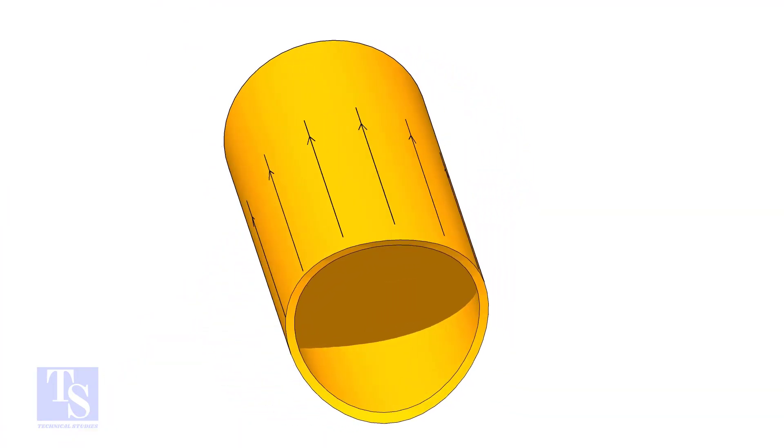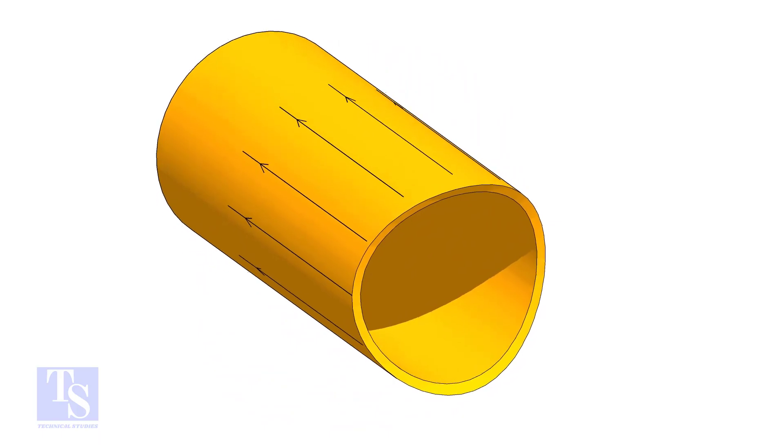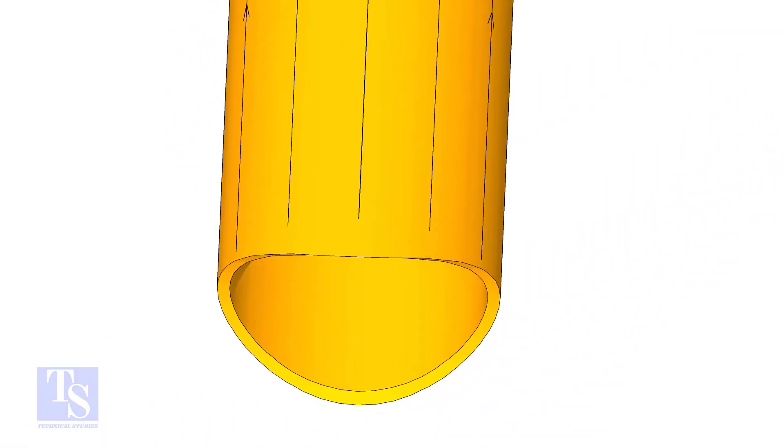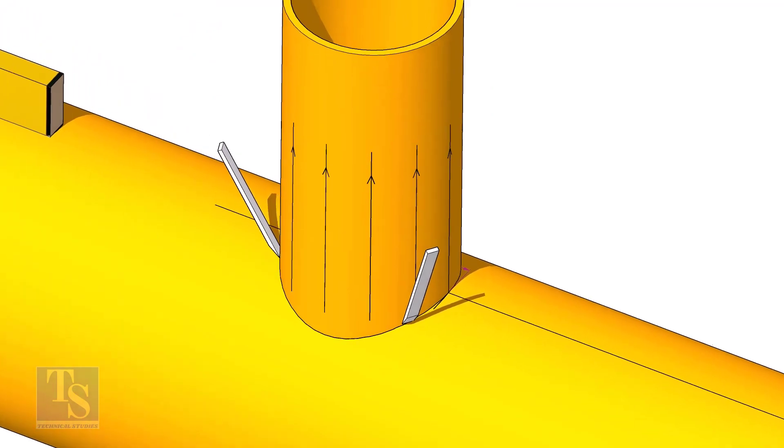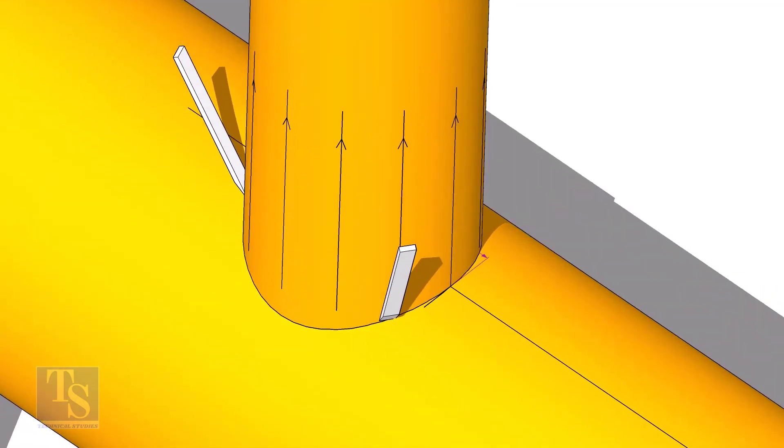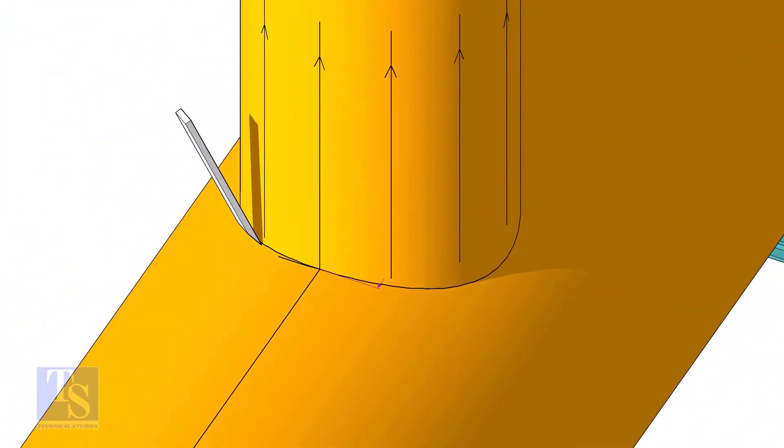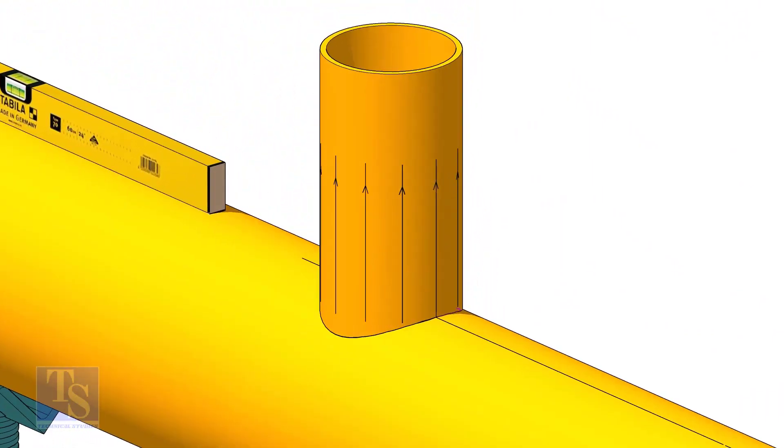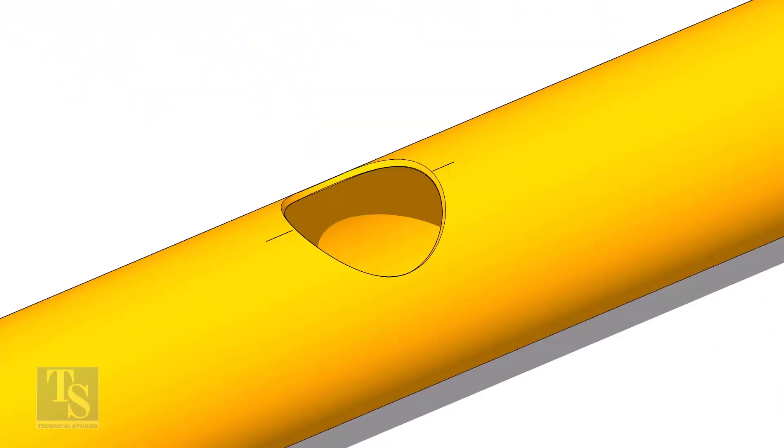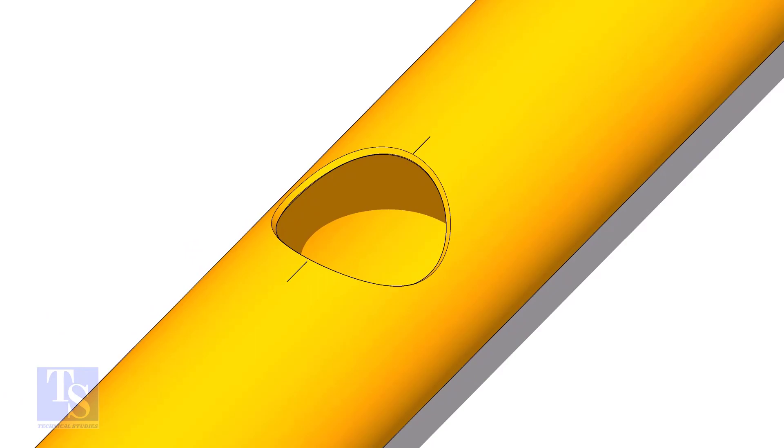After cutting and grinding the notch on the branch pipe, put it on the header. Make sure it is exactly in its position and mark the opening on the header as shown. Cut the opening on the header. Prepare the bevel.